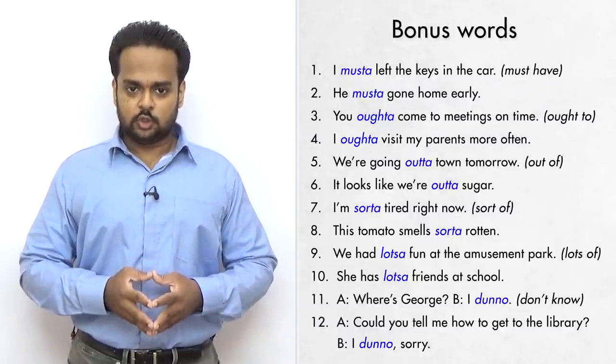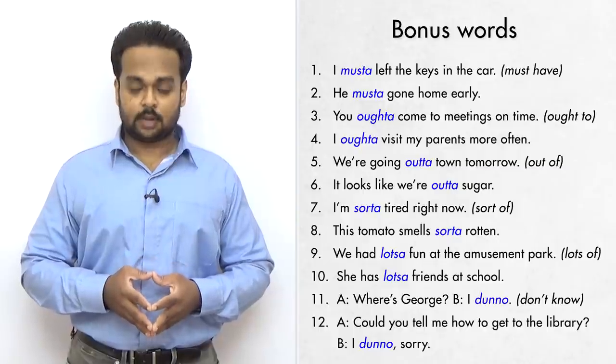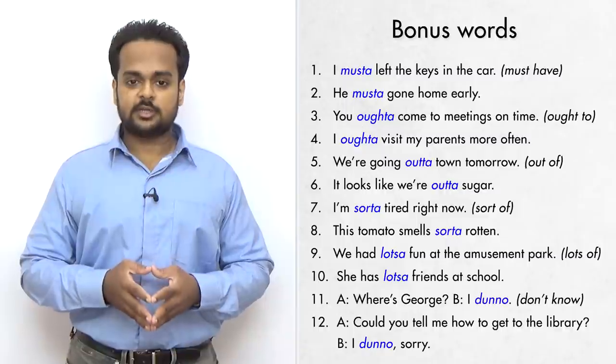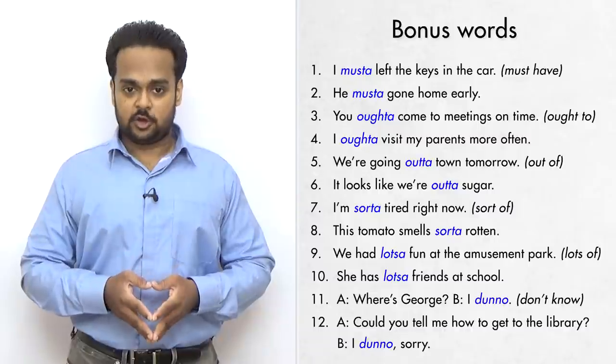OK, in this lesson, you learned the ten most important reductions in English. But there are others. So here are six more – musta, oughta, outa, sorta, lotsa and dunno.